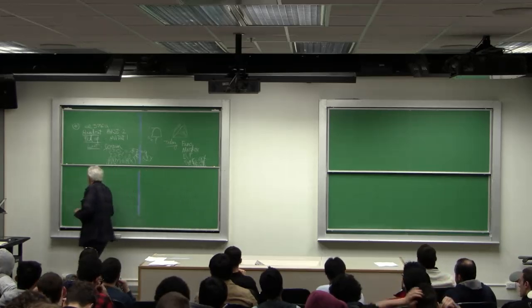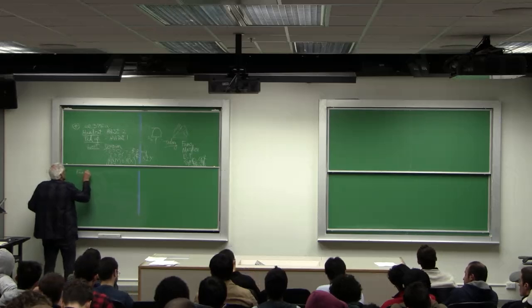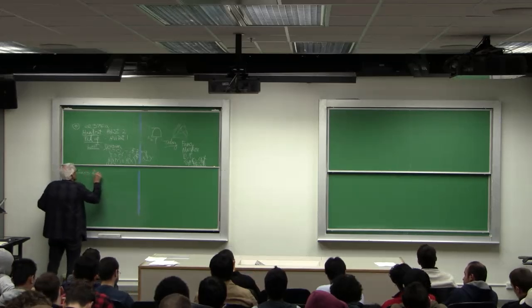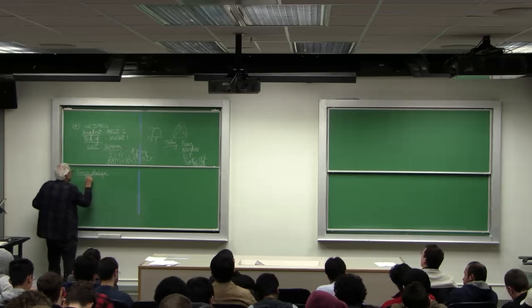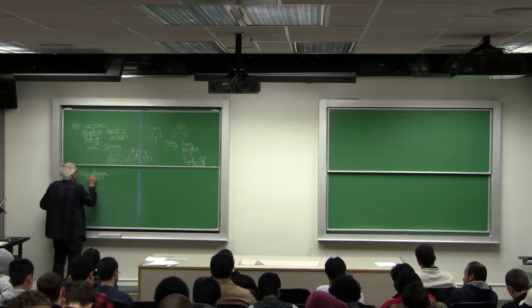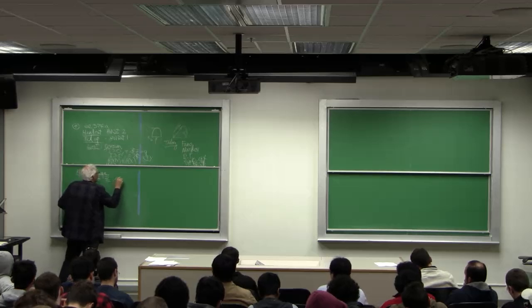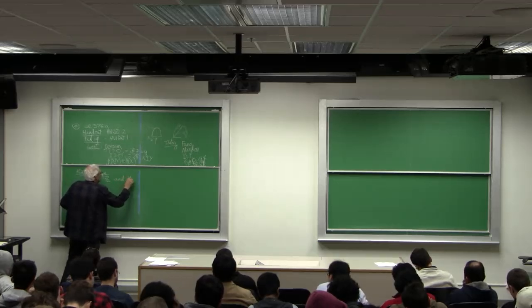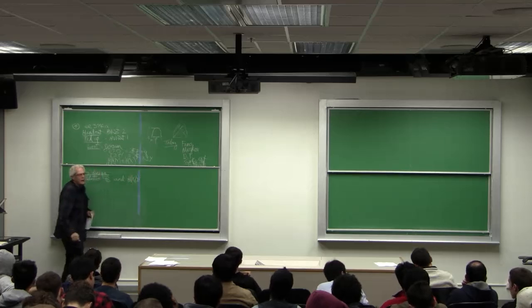Let's start with Fano's inequality. It relates probability of error and entropy.